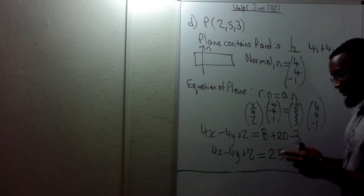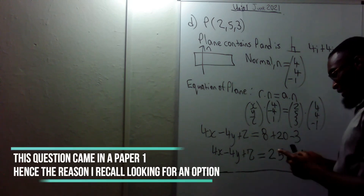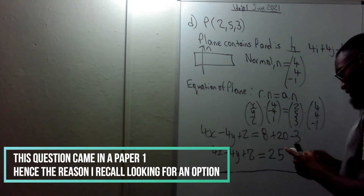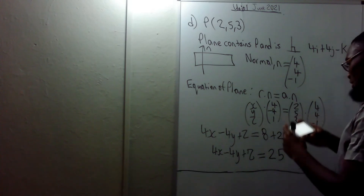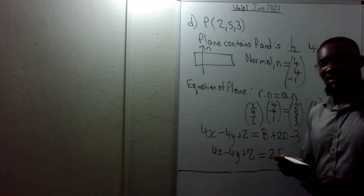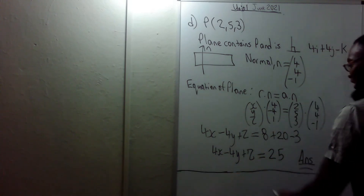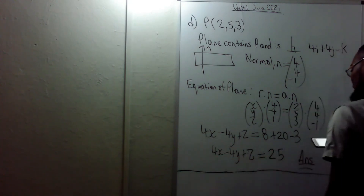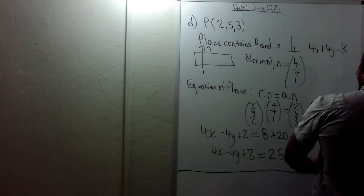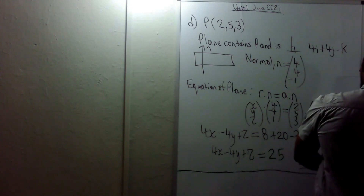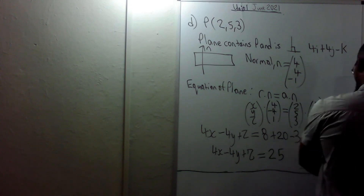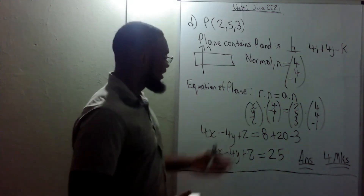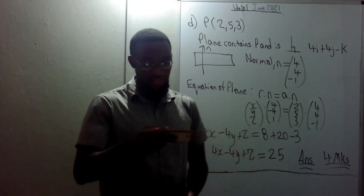The answer is 4x minus 4y plus z equals 25. That is worth 4 marks. That takes care of module 2 — stay tuned for module 3.